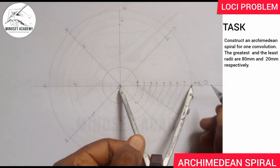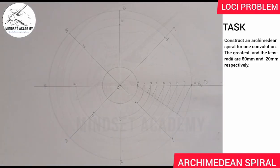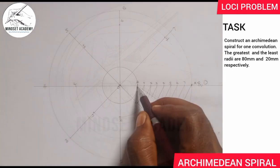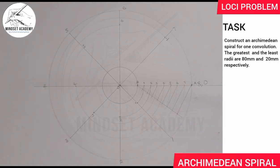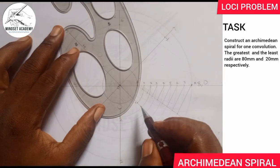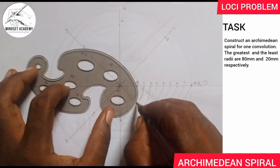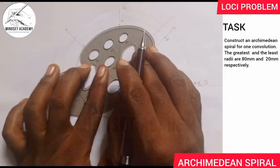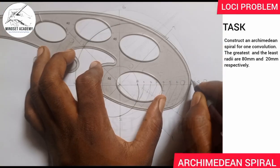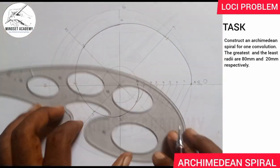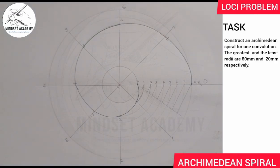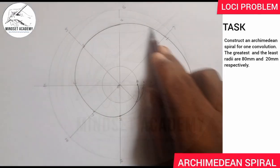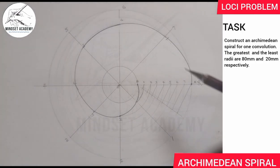Point 8 is already at the outermost circle. All these plotted points are now joined together using a French curve, starting from point B (which is point zero), smoothly connecting through each marked point to complete the Archimedean spiral.